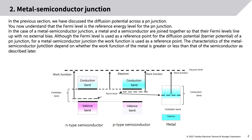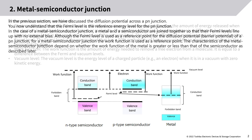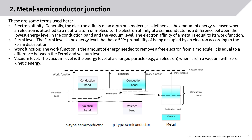Although the Fermi level is used as a reference point for the diffusion potential (barrier potential) of a PN junction, for a metal-semiconductor junction the work function is used as a reference point. The characteristics of the metal-semiconductor junction depend on whether the work function of the metal is greater or less than that of the semiconductor, as described later.